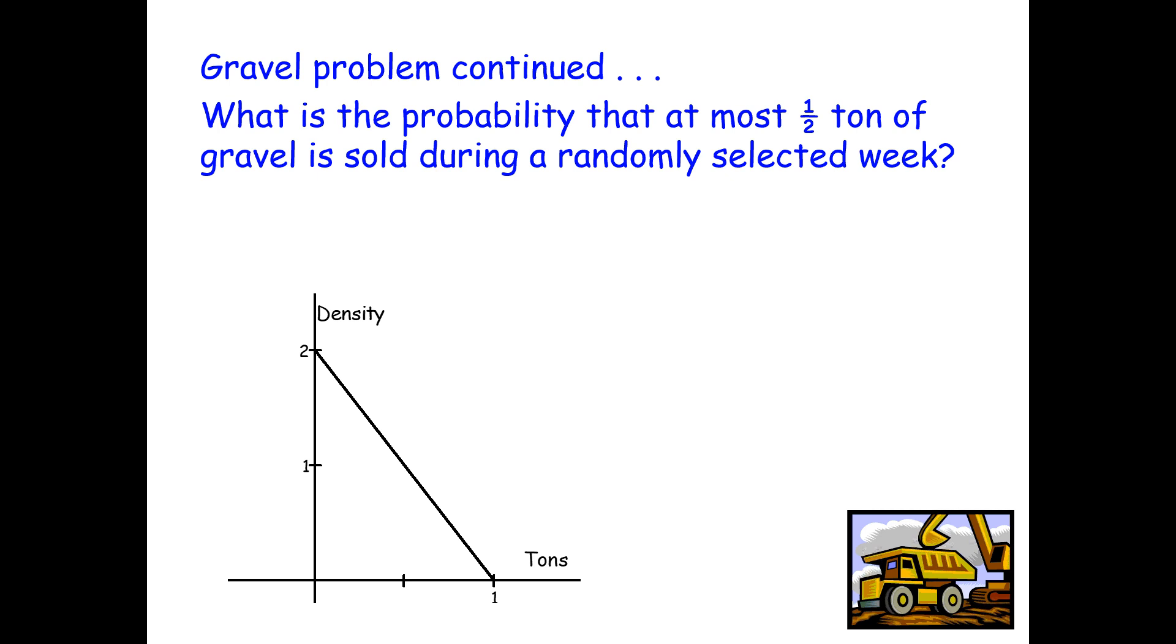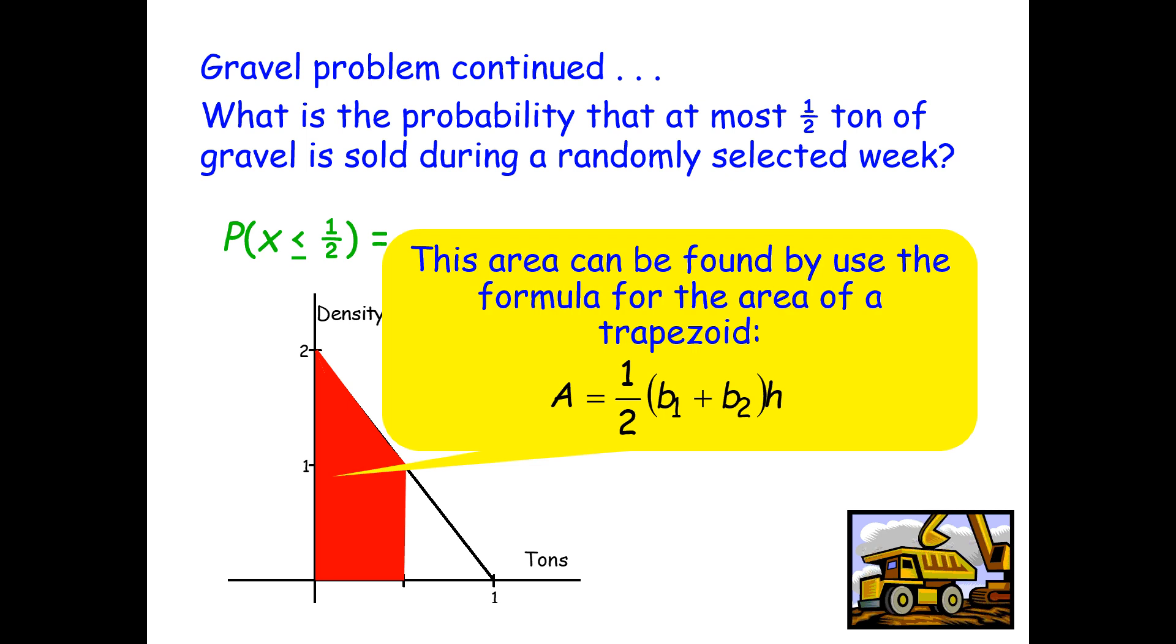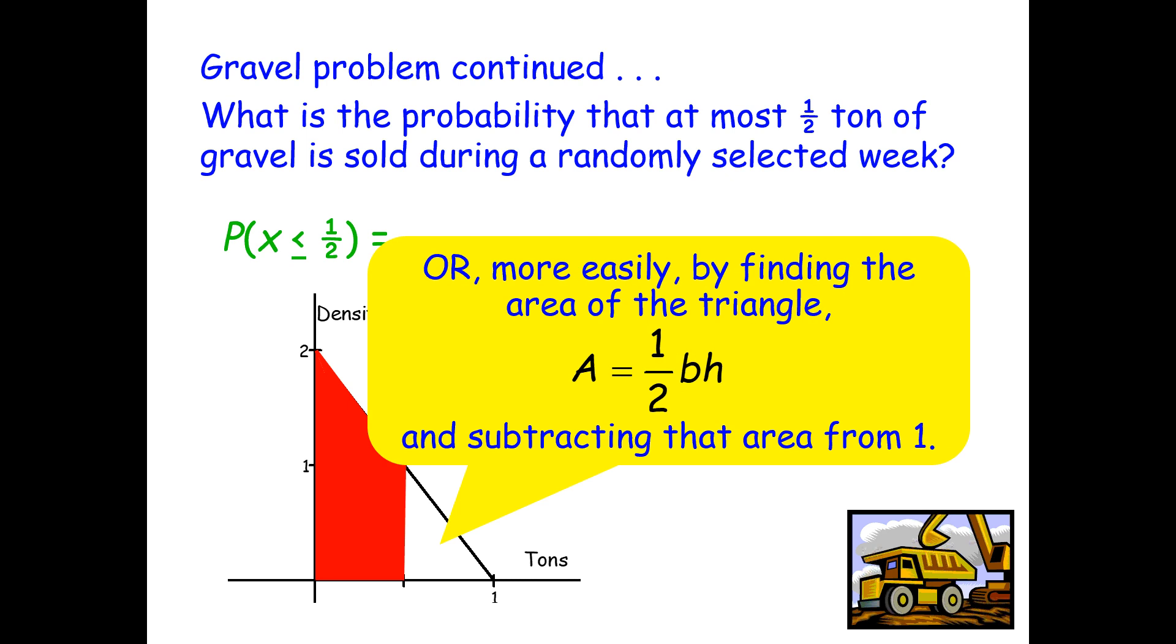So the question is, what is the probability that at most a half a ton of gravel is sold during a randomly selected week? So we're looking for the probability that x is less than or equal to 1 half. The probability would be the shaded area under the curve and above the interval from 0 to 0.5. This area can be found using the formula for the area of a trapezoid. An easier way to find this area would be to find the area of the triangle that's not shaded and subtract that from 1.